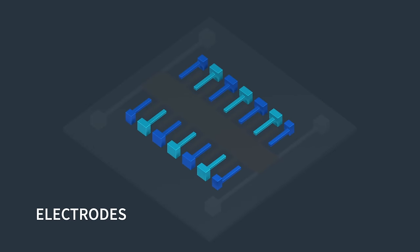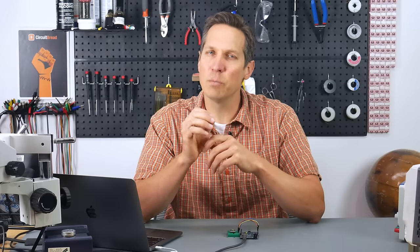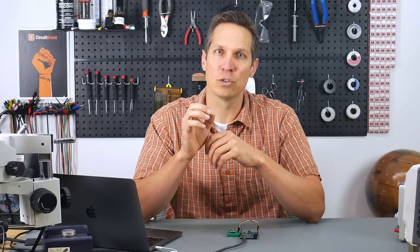Electrodes are structures fixed in the substrate and remain stationary, unlike the proof mass, which can move about when there are acceleration forces on it. It's important to emphasize that proof mass and electrodes do not touch together, but form a comb-like structure.